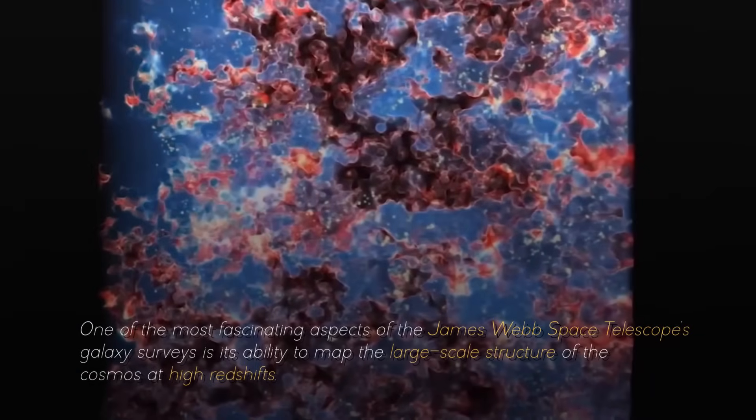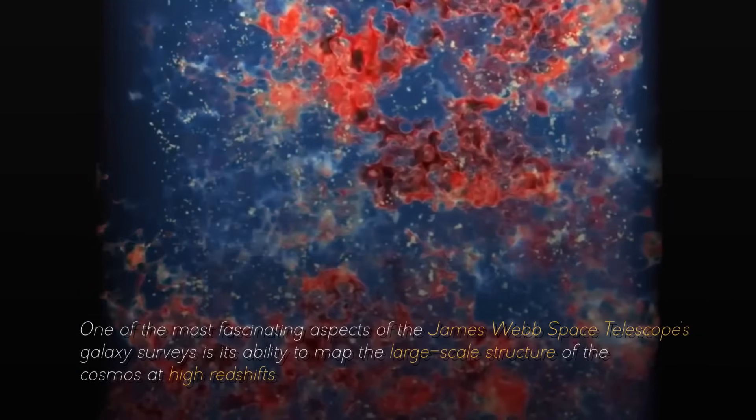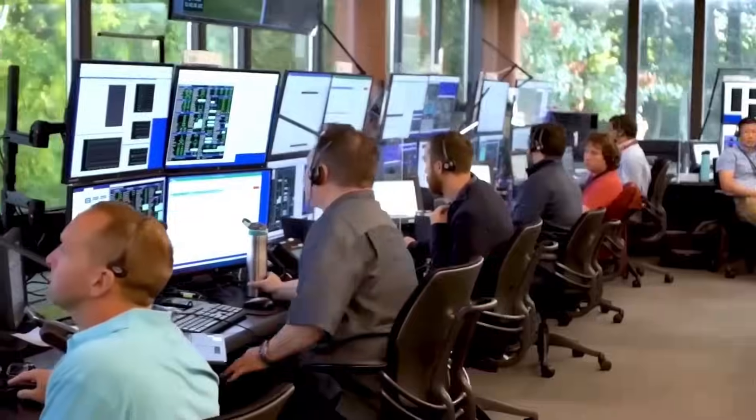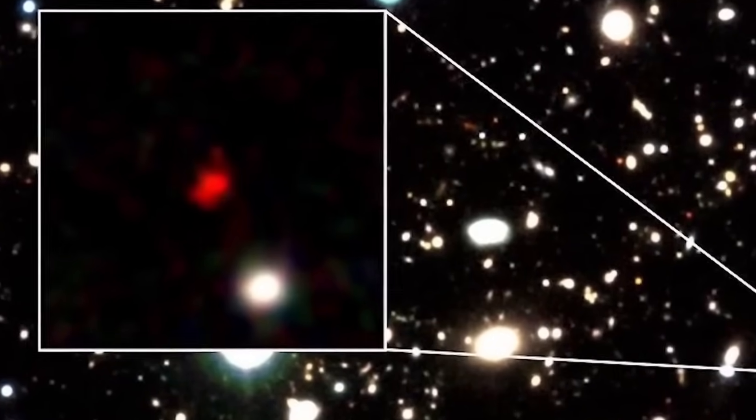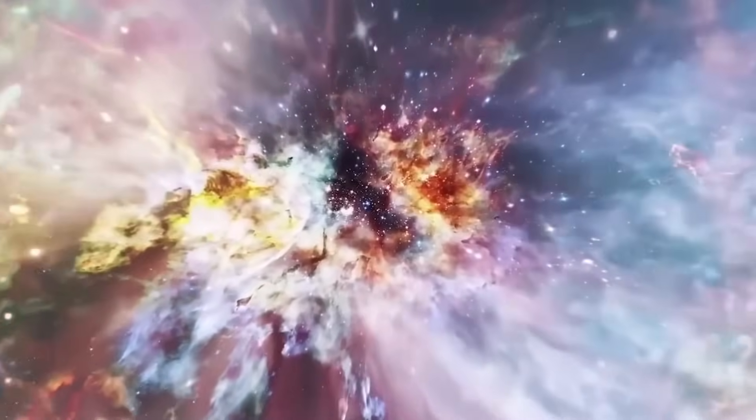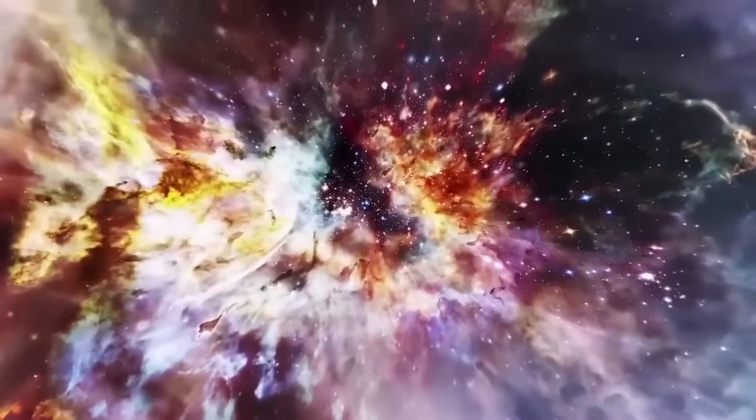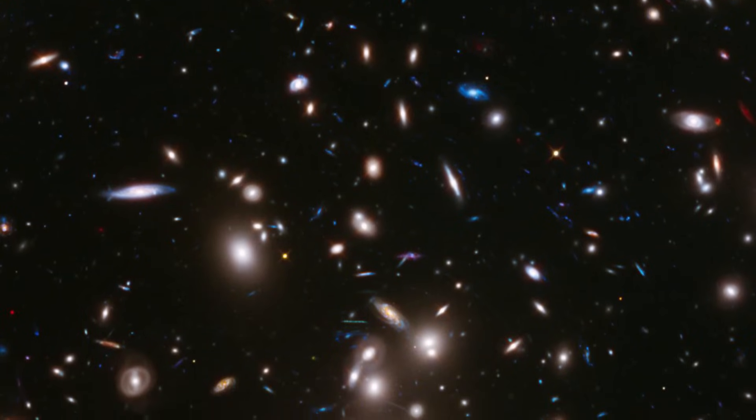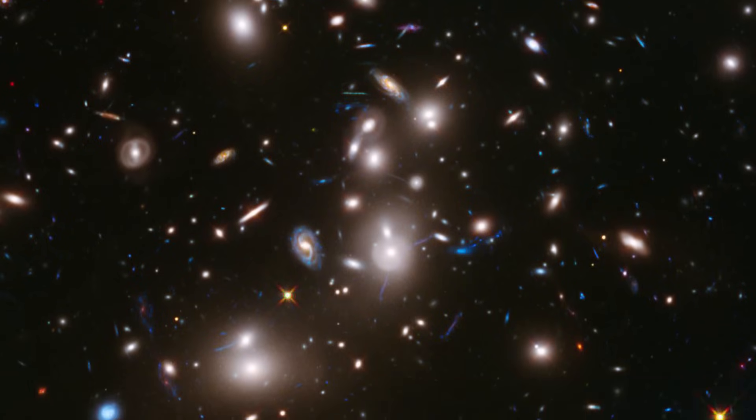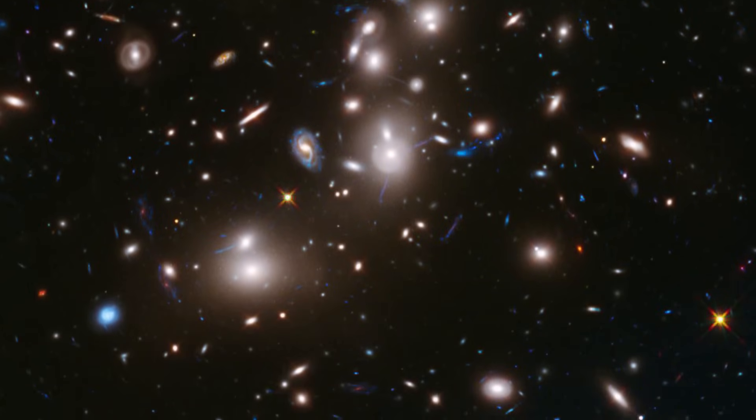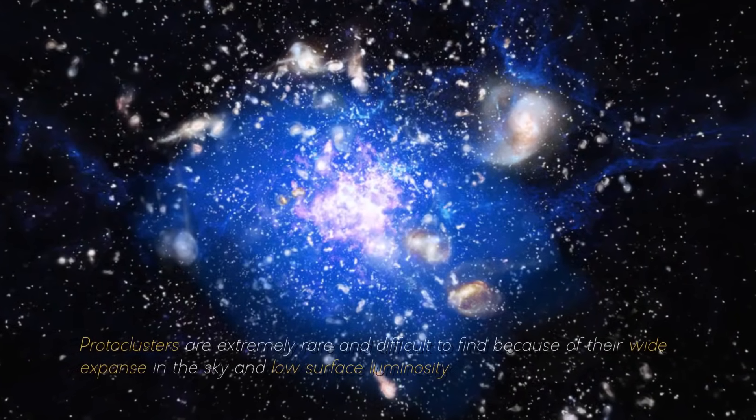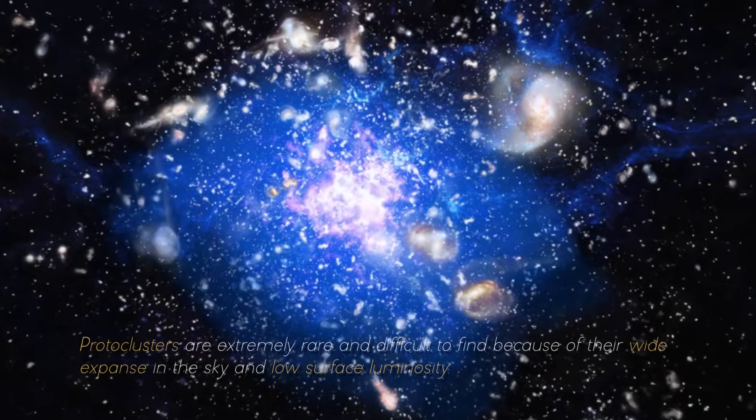One of the most fascinating aspects of the James Webb Space Telescope's galaxy surveys is its ability to map the large-scale structure of the cosmos at high redshifts, when galaxies were still young and grouped into large clusters known as protoclusters. These protoclusters are the predecessors of today's galaxy clusters, which are the largest gravitational structures in the universe. By studying these protoclusters, we can learn about the interactions between galaxies, their interactions with their surroundings, their growth and merger, and how they influence the formation of stars and planets.